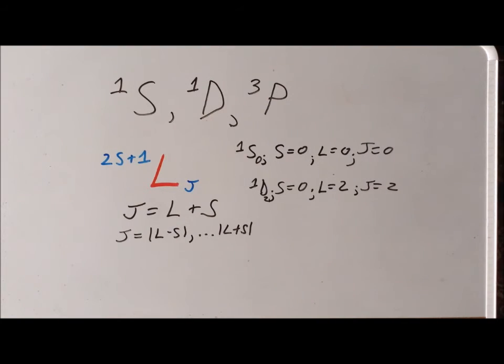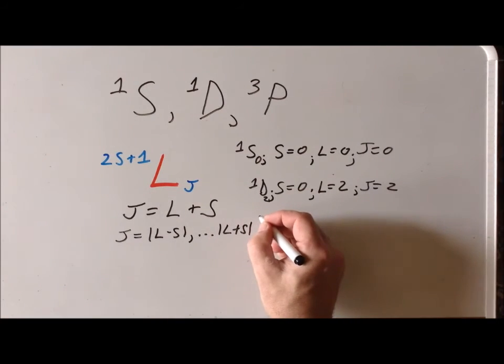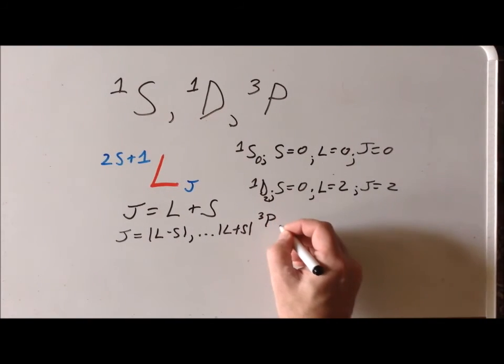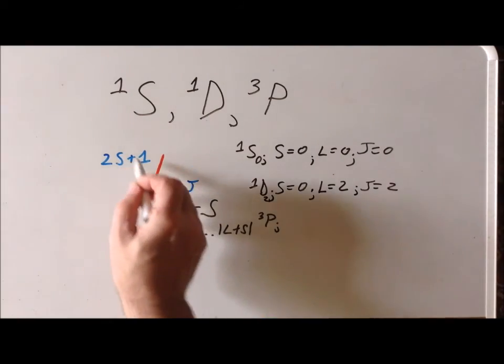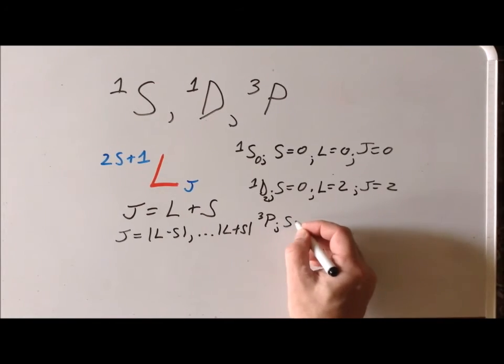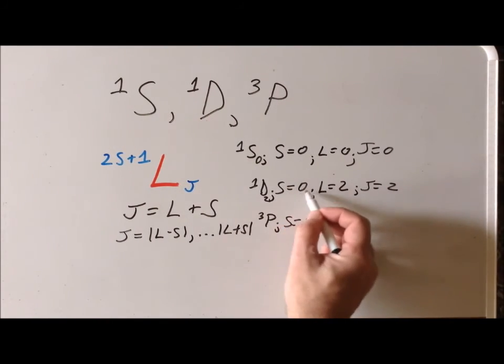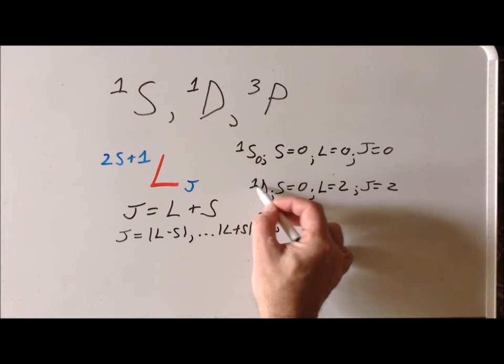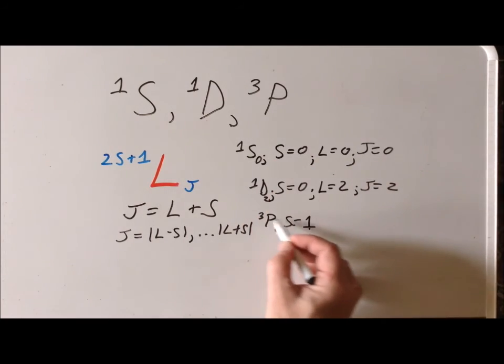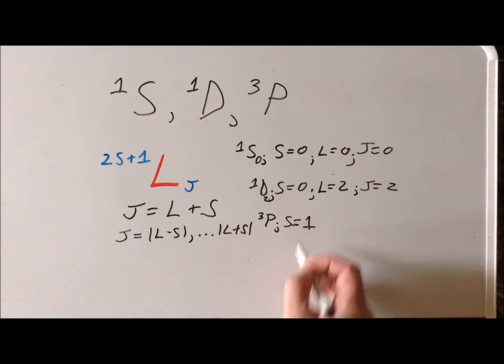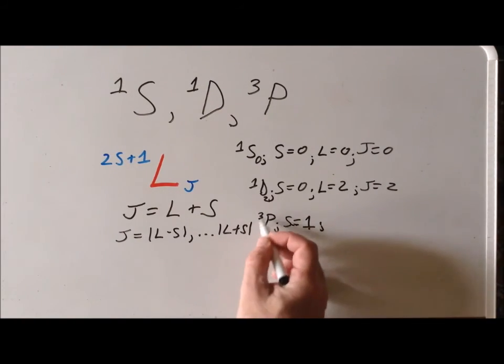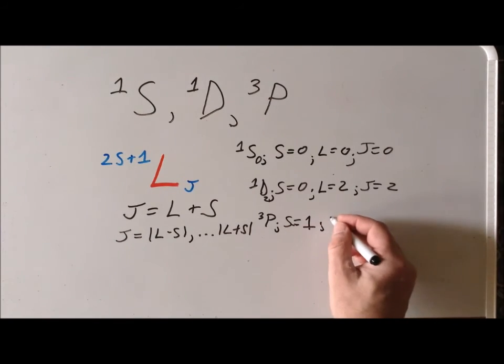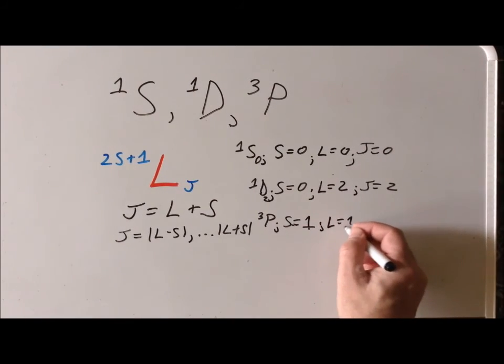Once we get to the triplet P, we notice that since it's a triplet, the value of S had to be equal to 1. So S goes from 0 to 1 when we have a 3 to tell us that the total spin is equal to 1. What about L? Since we have a P here, it tells us that L is equal to 1.